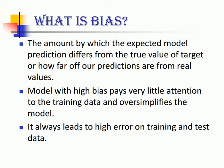So what is bias? Bias is the amount by which the expected model prediction differs from the true value of the target, or how far off our predictions are from real values. A model with high bias pays very little attention to the training data and basically oversimplifies the model. It always leads to high error on training as well as testing data sets.